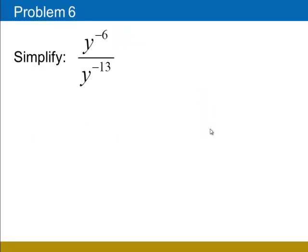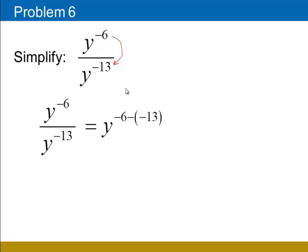The rule on display in problem 6 is the quotient rule. The quotient rule tells us that when we have the same base in the numerator and the denominator, we subtract the exponents — numerator minus denominator. So in this case, that will be negative 6 minus negative 13. Remember that when we subtract a negative number, it's the same as adding a positive number. And negative 6 plus 13 is positive 7, so our result is y to the 7th power.